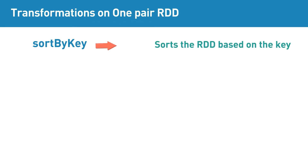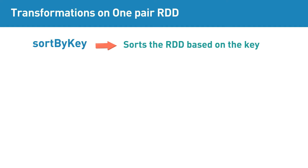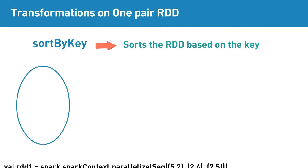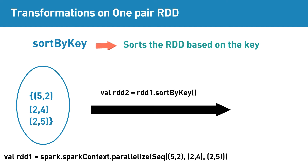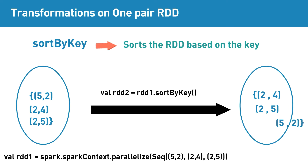sortByKey is a pair RDD transformation that sorts the RDD based on the key. This transformation doesn't take any function. For example, if the input RDD contains elements (5,2), (2,4), (2,5), then sortByKey transformation will return (2,4), (2,5), (5,2) as the resultant RDD. Here the elements are sorted based on the key.